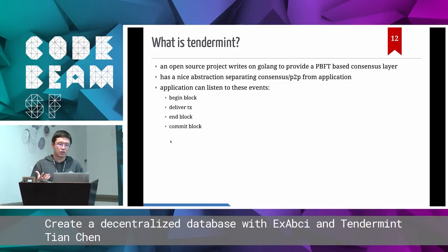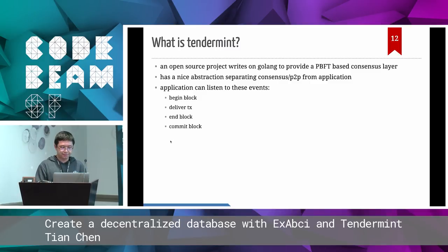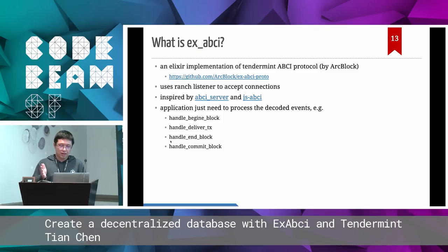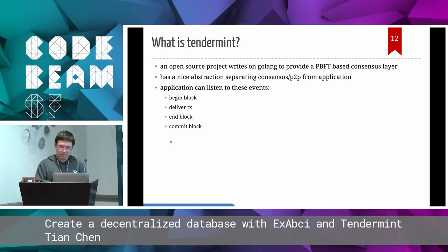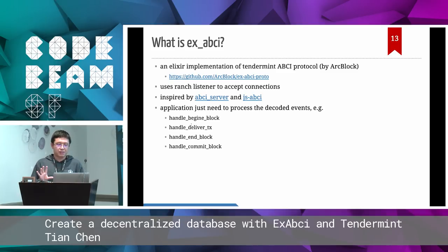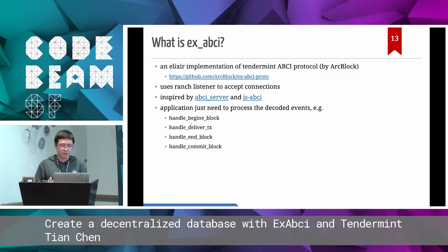Tendermint provides a list of events such as begin block, deliver transaction, end block, and commit block — those are the most important ones. Since Tendermint is written in Go, we need to build our own library to use it easily in Elixir so that developers don't need to write directly against the TCP server and TCP messages. In Erlang terms, we want to work with messages. So ExABCI wraps the entire TCP server and puts all those message data into wrapped messages, so you just need to handle begin block and deliver transaction — you just implement those callback functions and you're good to go.